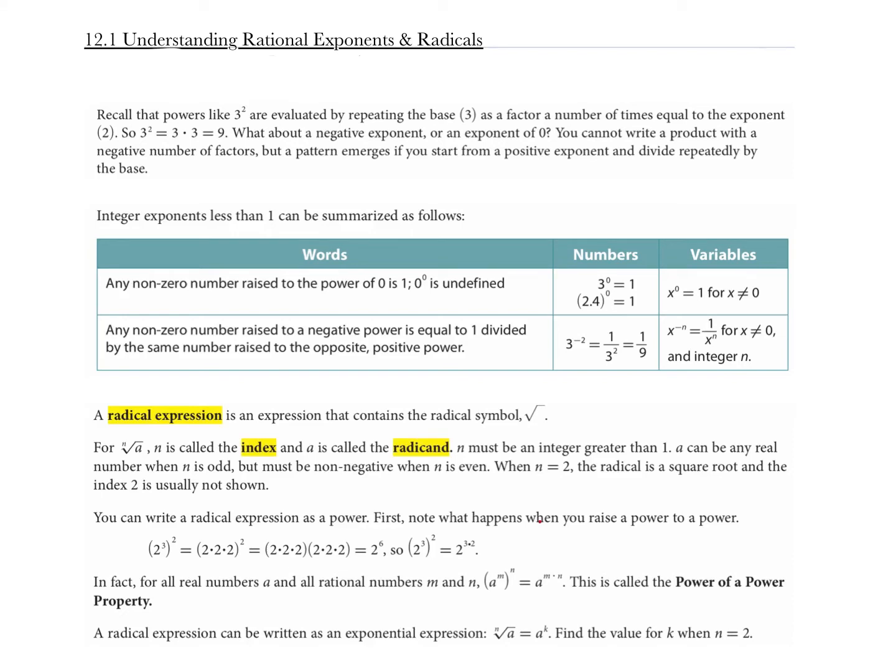Section 12-1 goes over understanding rational expressions and radicals. With these rational expressions, we're talking about rational exponents — exponents that are fractions as well as negative numbers. We're going to start by looking at what a radical expression is and the parts of that radical expression.